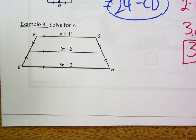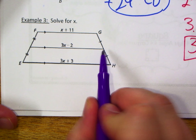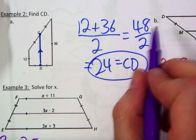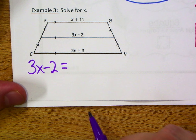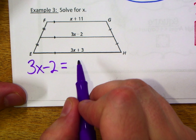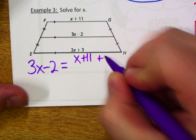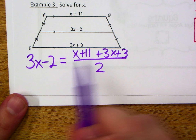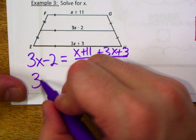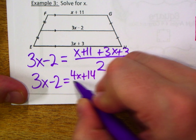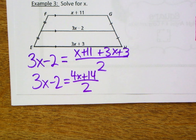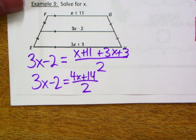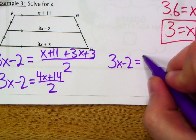Let's talk through the setup. The mid-segment is (3x − 2), which equals the average of the two bases: (x + 11) and (3x + 3). So: 3x − 2 = [(x + 11) + (3x + 3)] / 2. Combining: x + 3x = 4x, and 11 + 3 = 14, giving 3x − 2 = (4x + 14) / 2. Since 2 divides nicely, simplify to 3x − 2 = 2x + 7.